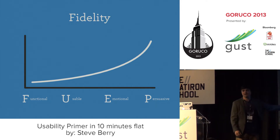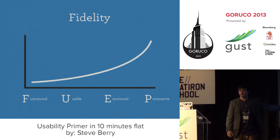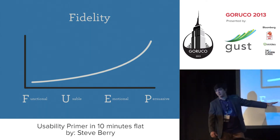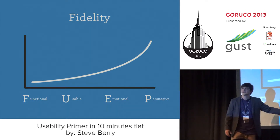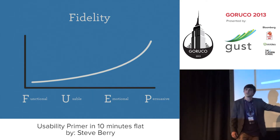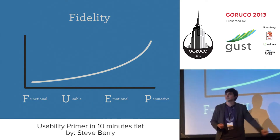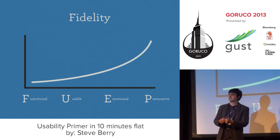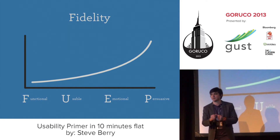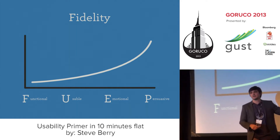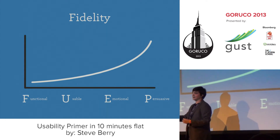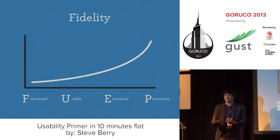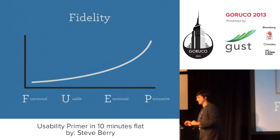Functional is something that Rails comes out of the box with. When you put it on Bootstrap, you have a functional web experience. The next one is usable, and that's when you optimize for particular tasks. Emotional is like Foursquare — when you check in, you get rewarded with a badge and you have that emotional attachment with the application. Then there's persuasive, and everyone tries to aspire to have these persuasive web experiences that change and modify behavior, but I don't think we're quite there yet.